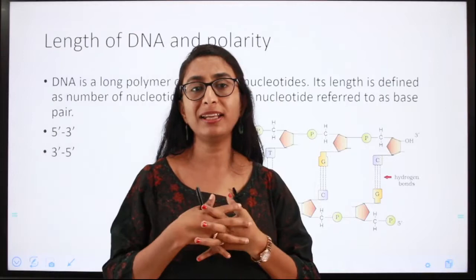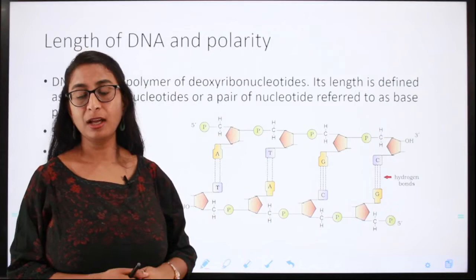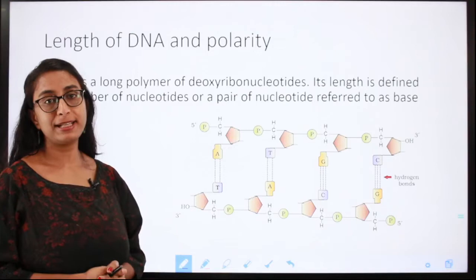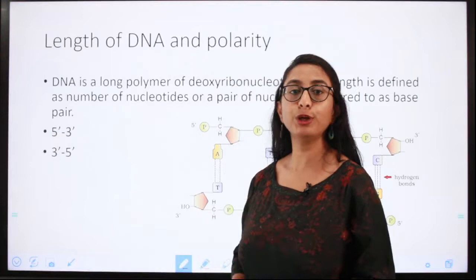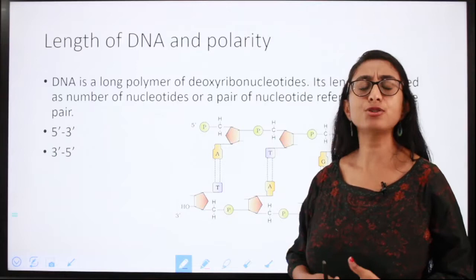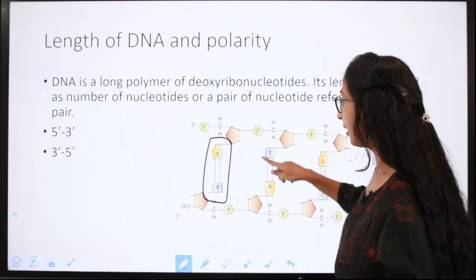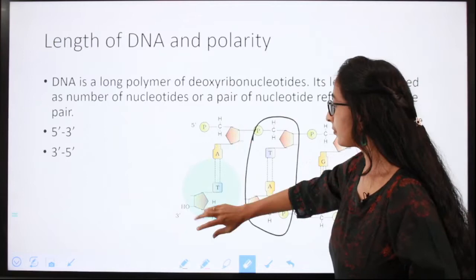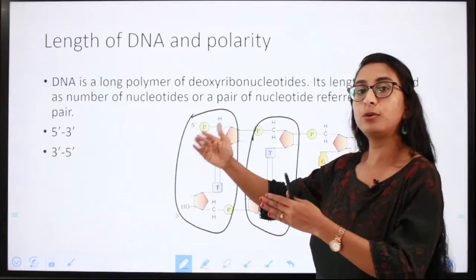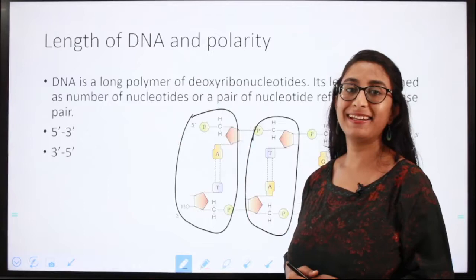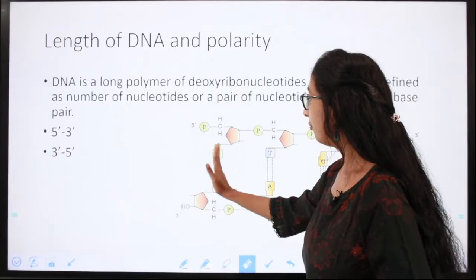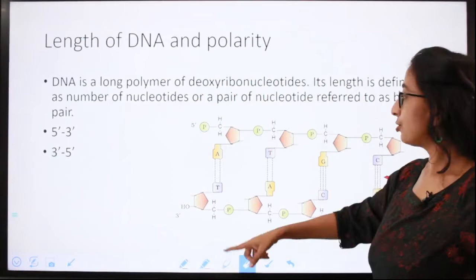How do we measure the length of DNA? DNA is a long polymer of deoxyribonucleotides, and its length is defined by the number of nucleotides or pairs of nucleotides — referred to as base pairs. So the length of DNA is measured in the form of base pairs.